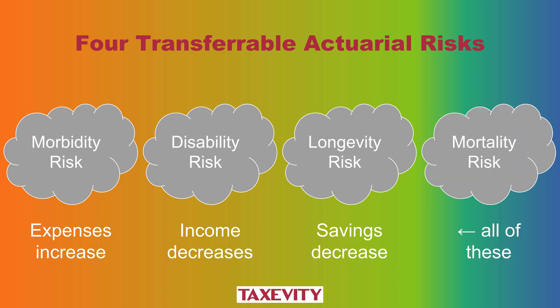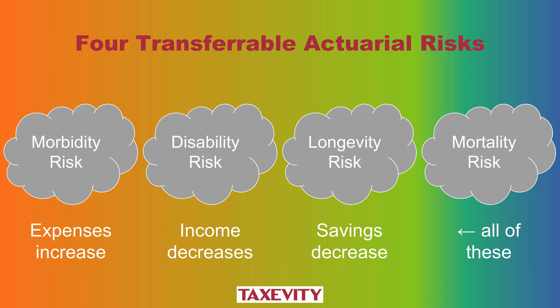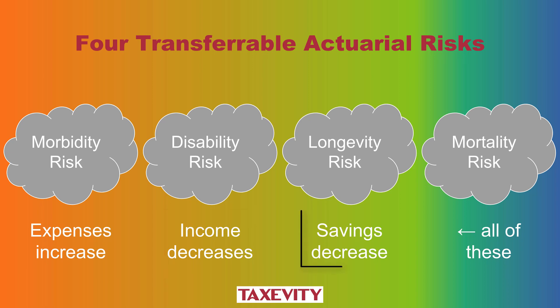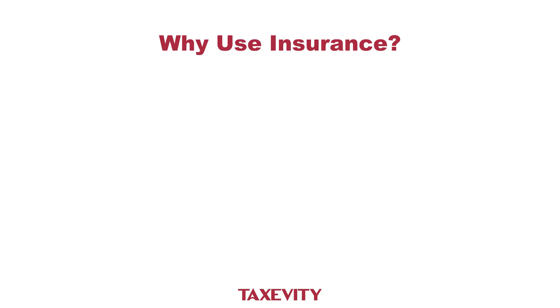There is also mortality risk. Here, expenses increase because of the taxes due at death, or in the case of a couple, at the time of the second death, the income decreases — in fact, it stops. Pensions will end when both spouses are gone. Savings also get eroded because money that could go to other causes goes to taxes and other final expenses.